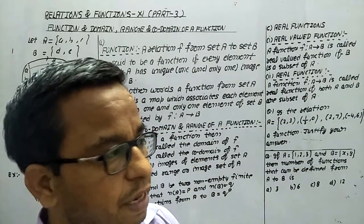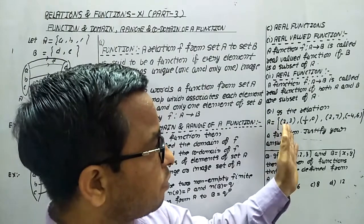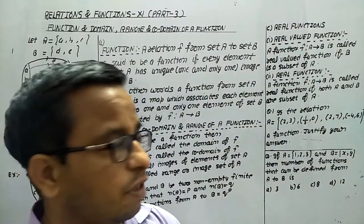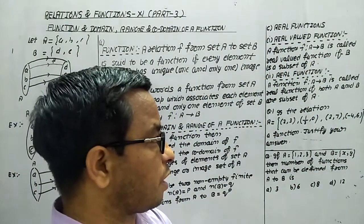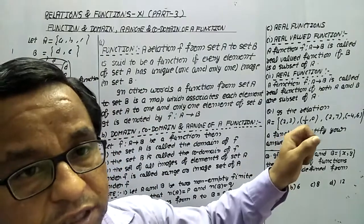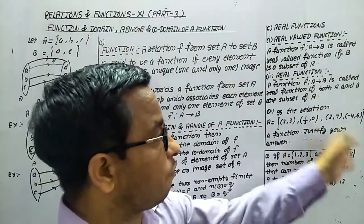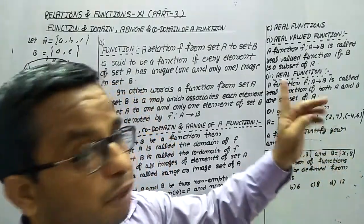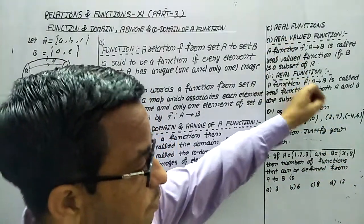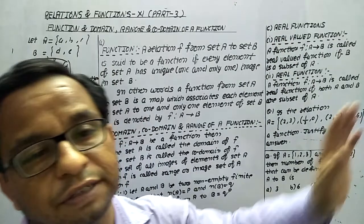For a function, every first element must have a unique image. If this condition is not met, it means it is not a function, but you can still say it is a relation.